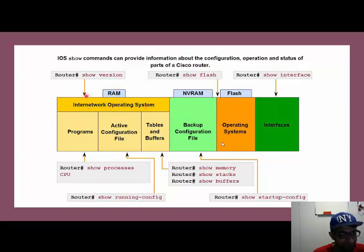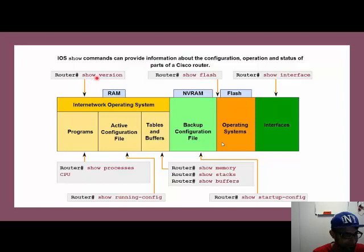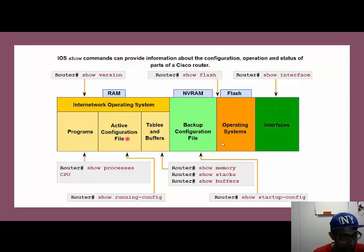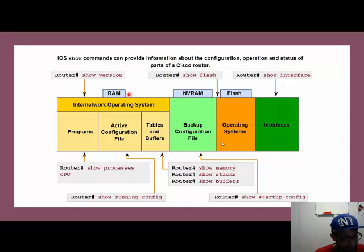Here you can see the buffers and other memory information. If you want to see the startup configuration that is stored in the NVRAM, you type the command 'show startup-config' in the privileged exec mode. This allows you to see everything that is backed up in the NVRAM.